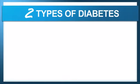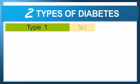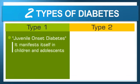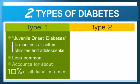First off, there are two types of diabetes: type 1 and type 2. Type 1 diabetes was traditionally known as "juvenile onset diabetes" because it manifests itself typically in children and adolescents. Thankfully, this type is less common and accounts for about 10% of all diabetes cases.